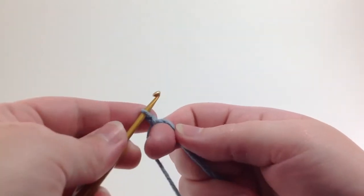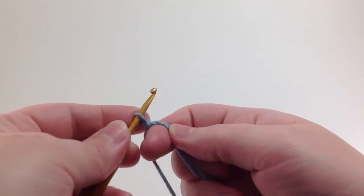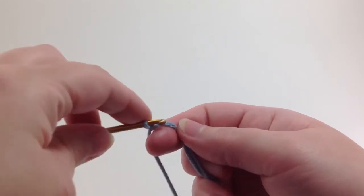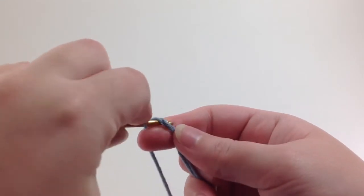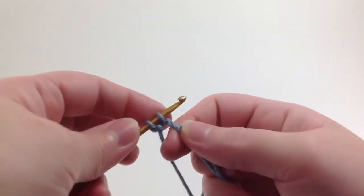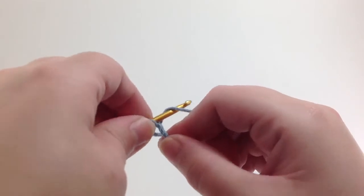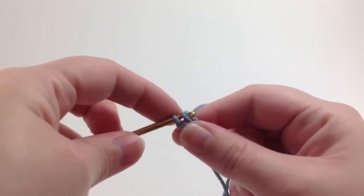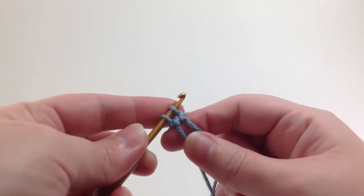And you'll just repeat that for however many stitches you want for your cast-on. So to make the second stitch, I'll go under again, grab my yarn, pull it through, go back, grab my yarn, pull it through again. That's two stitches.